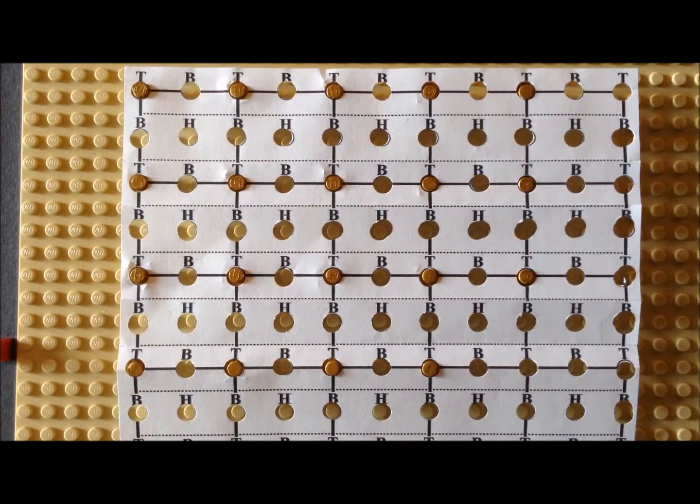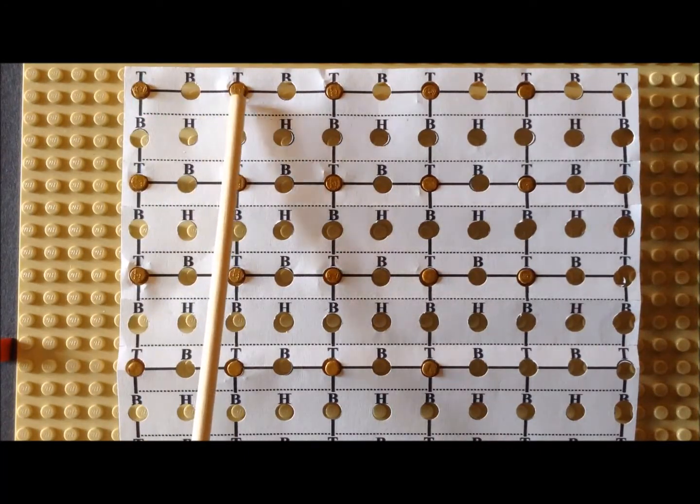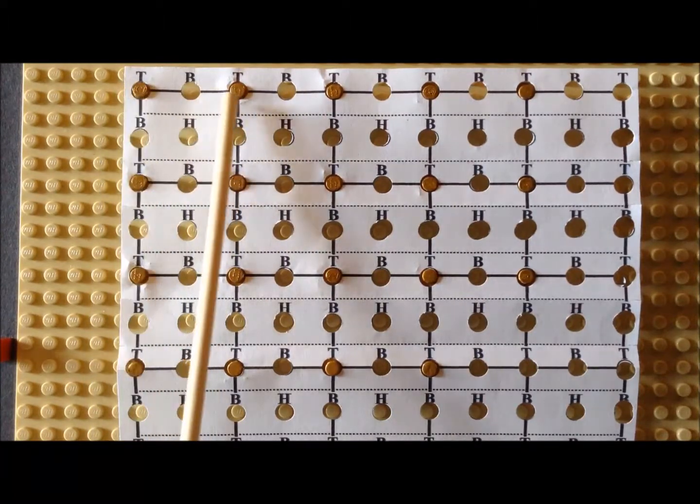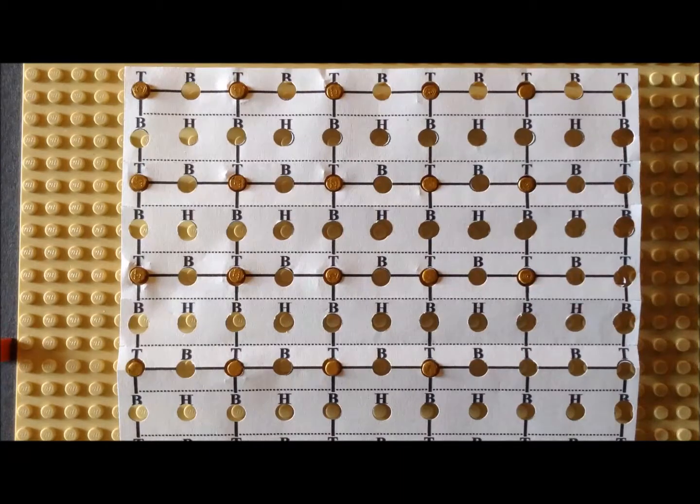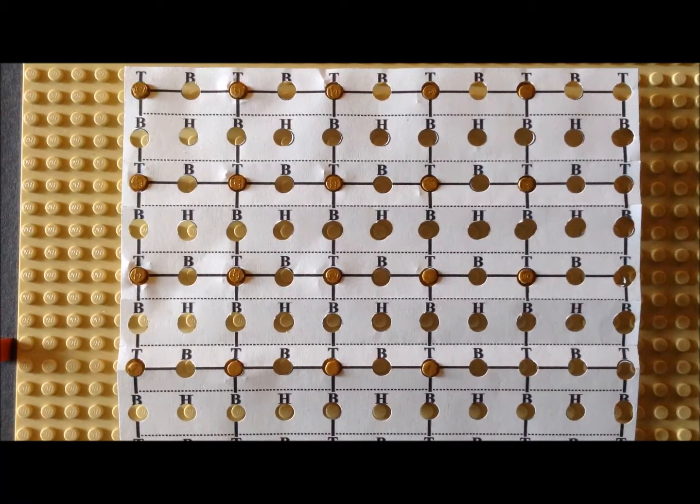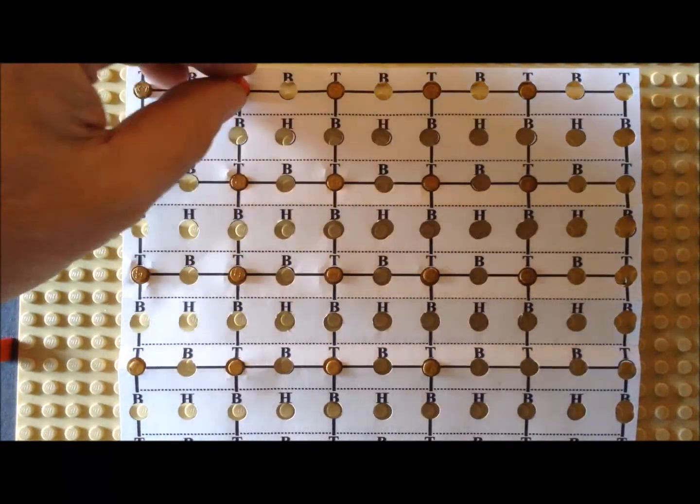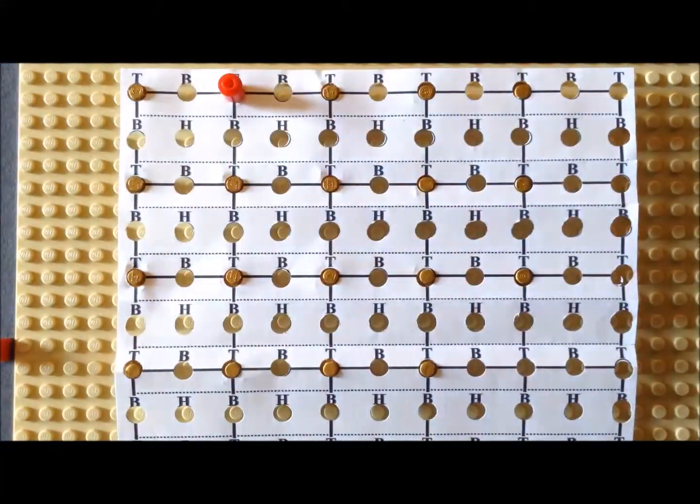We also have the absorption positions labeled. So for example, where we have the particular atoms of the metal, these are the on-top positions. So for example, we could have an oxygen atom bind directly at the on-top position. That's the T position.